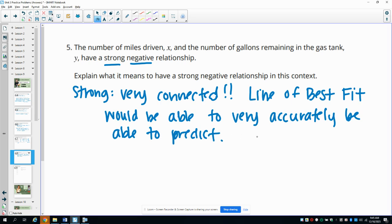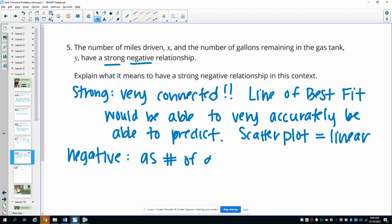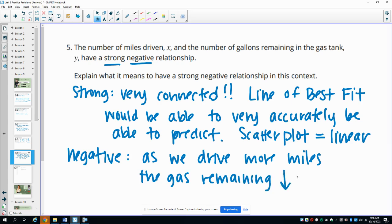Because all of these points, the scatterplot is going to look like a line or it's going to be linear. So it's going to be pretty linear. And then the negative here, so negative relationship in this context means as the number of miles goes up, as you drive more miles. So as we drive more, the gas remaining decreases. So as the miles increase, the gas remaining decreases.